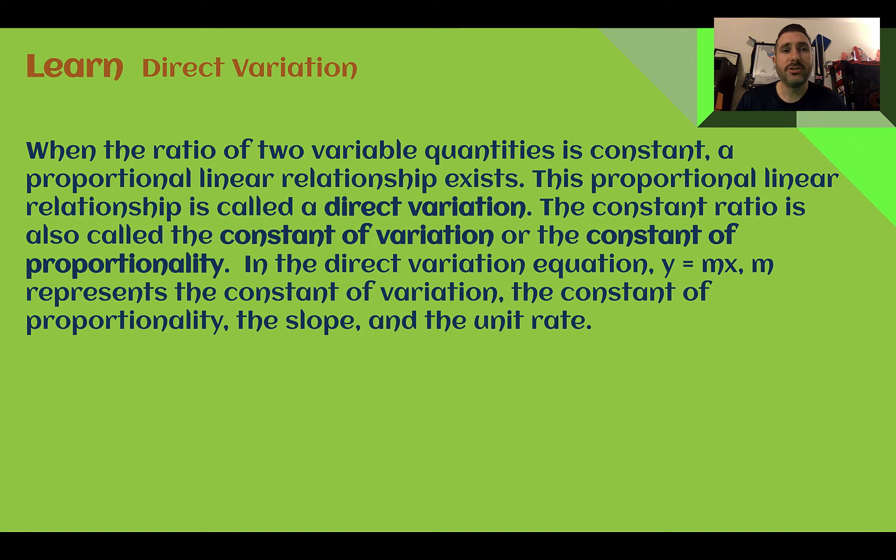Let's learn Direct Variation. When the ratio of two variable quantities is constant, a proportional linear relationship exists. We saw this in Lesson 1. This proportional linear relationship is called a direct variation, and that constant ratio or slope or unit rate that we've been finding also has other names called the constant of variation or the constant of proportionality as you may have learned in 7th grade.